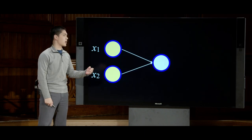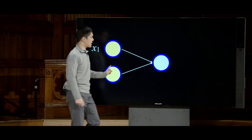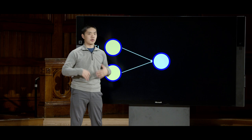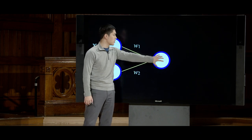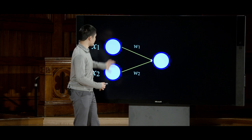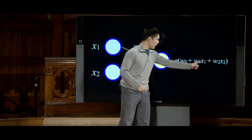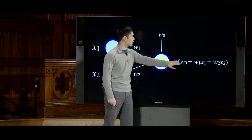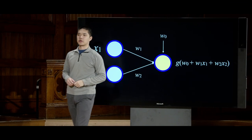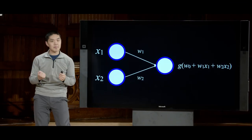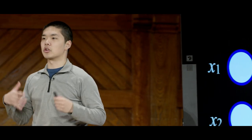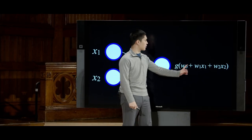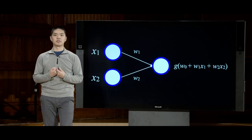Each of the two inputs represents an input variable, connected to the output via edges defined by their weights — weight1 and weight2. The output unit multiplies all inputs by their weights, adds in the bias term w0, then passes it through an activation function. This is just a graphical way of representing the same mathematical idea. We want the neural network to learn the values of w0, w1, and w2 and the activation function to get the expected result.